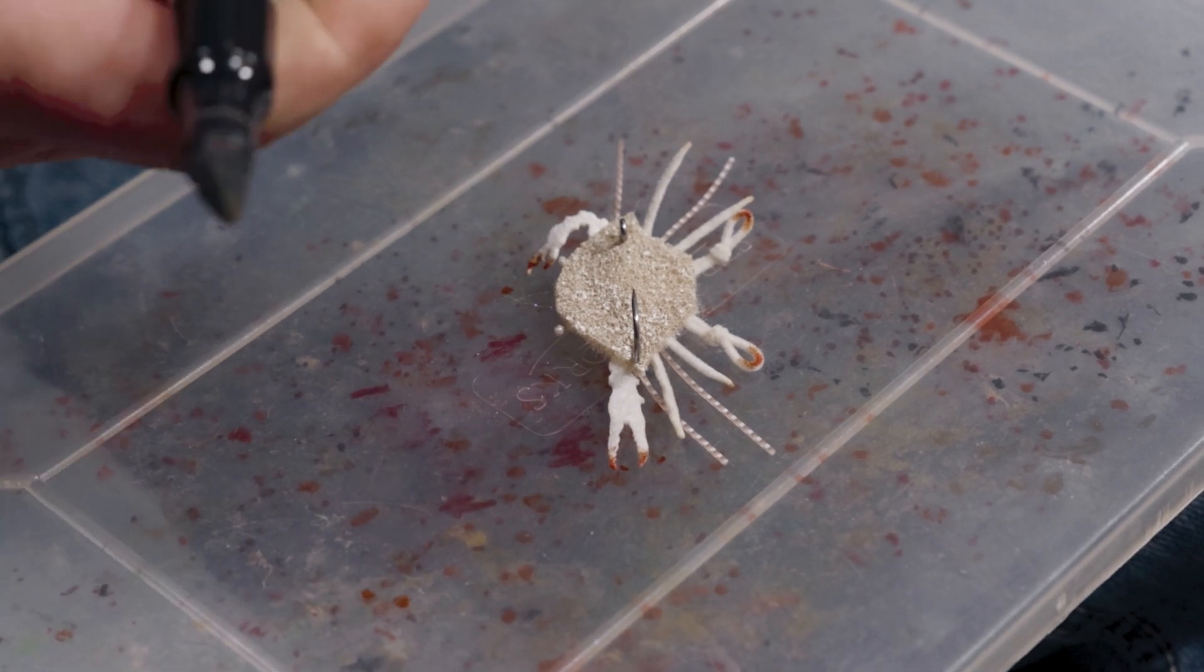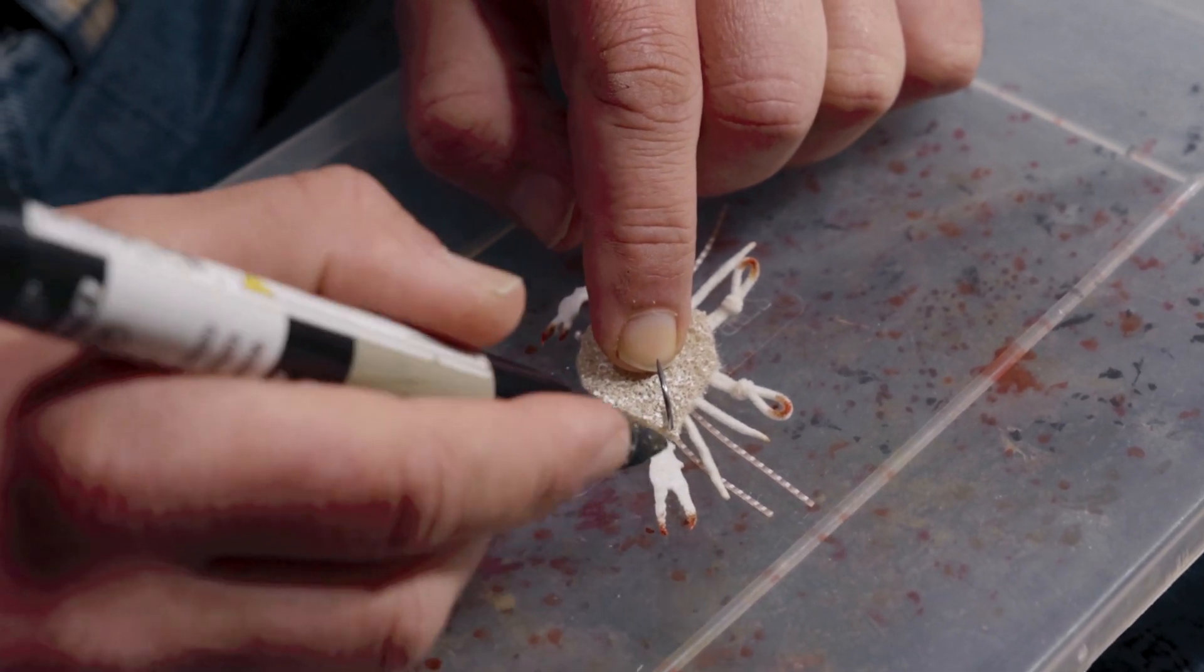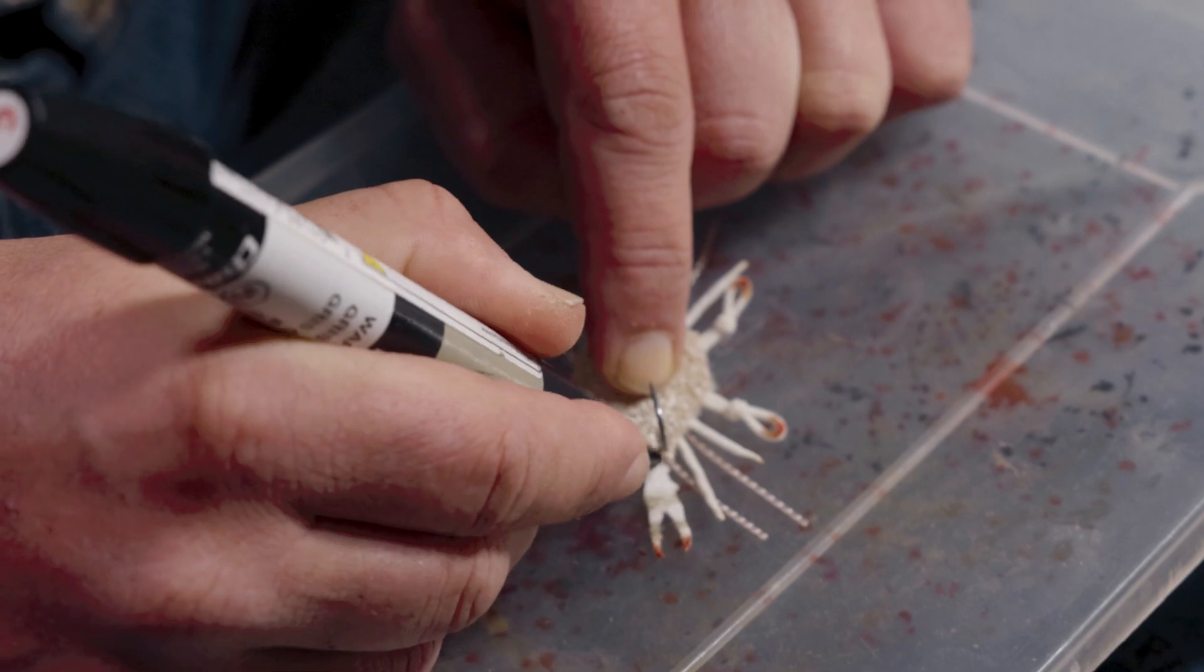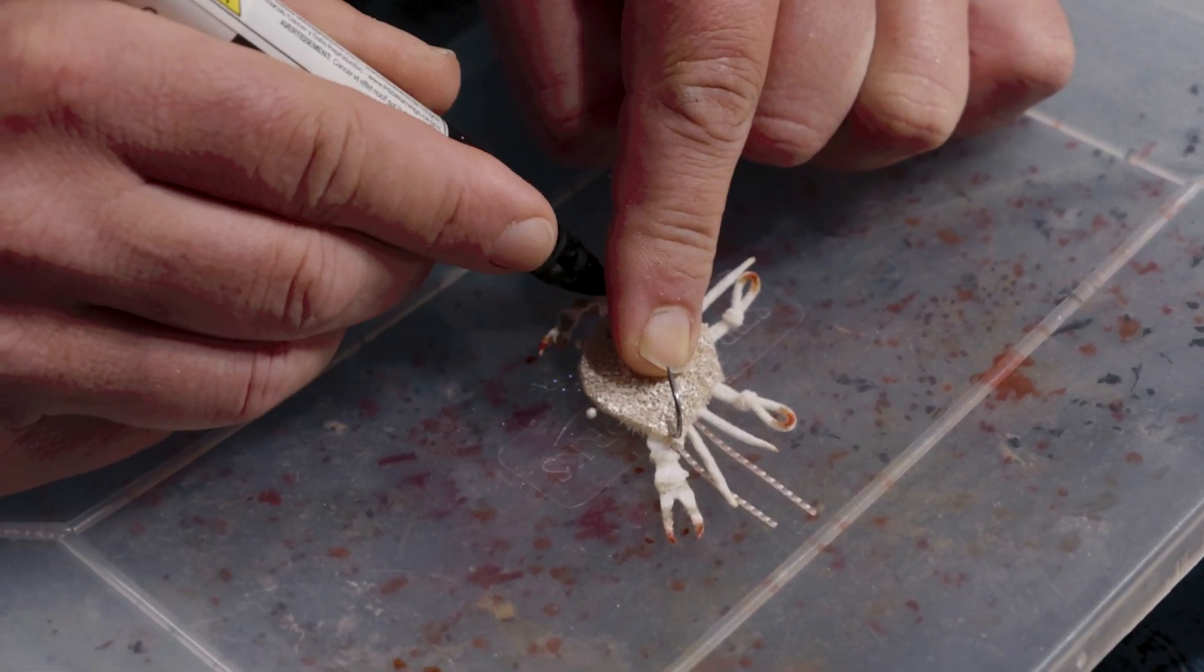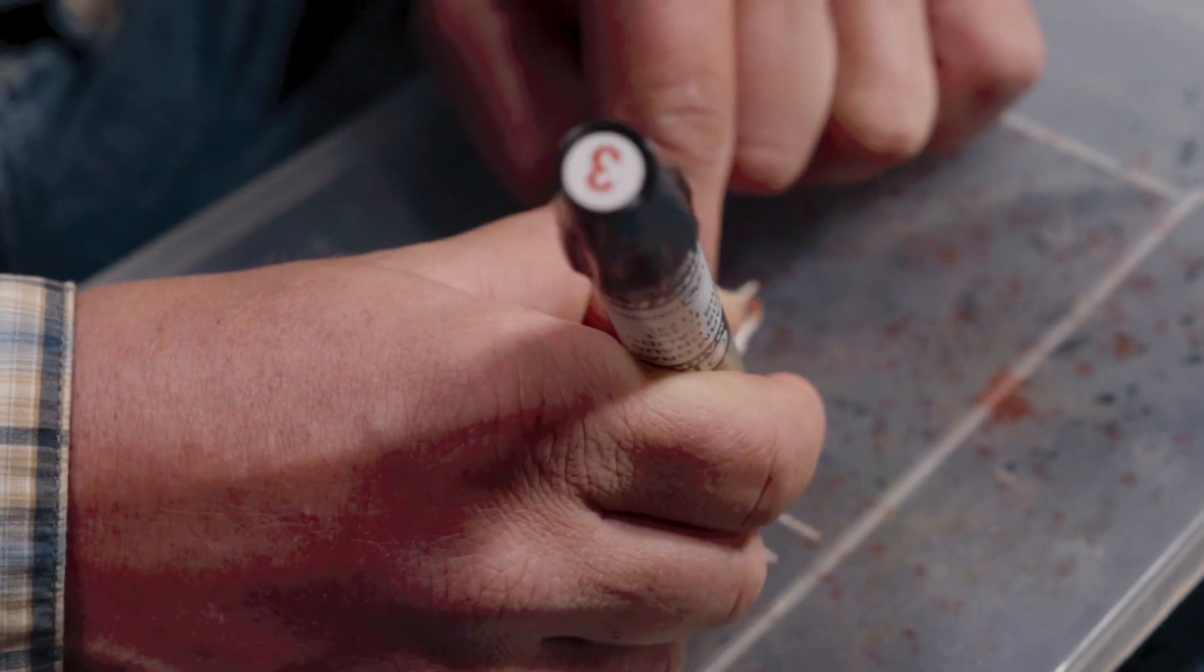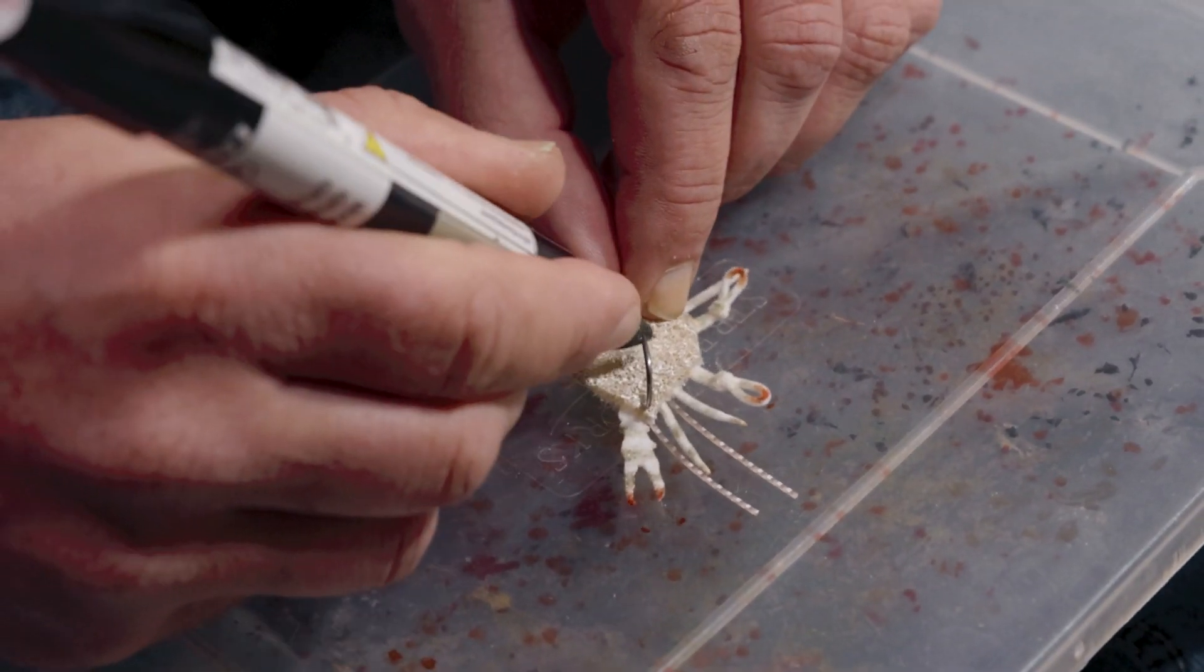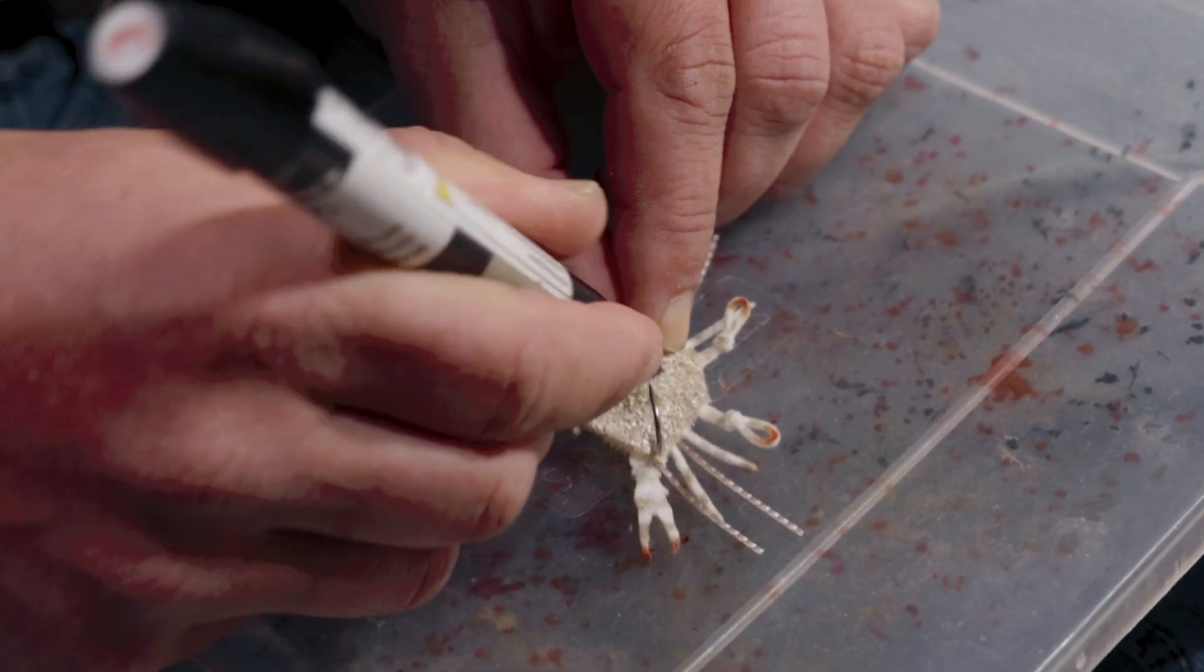Lastly, I'm going to take a warm gray, and this is the best way to describe it as kind of a muddy kind of tan, grayish tan. Great color to blend in. And I'm going to give the claws some barring, as well as the legs. And then lastly, just a little splash of that same color across the shell of the crab.